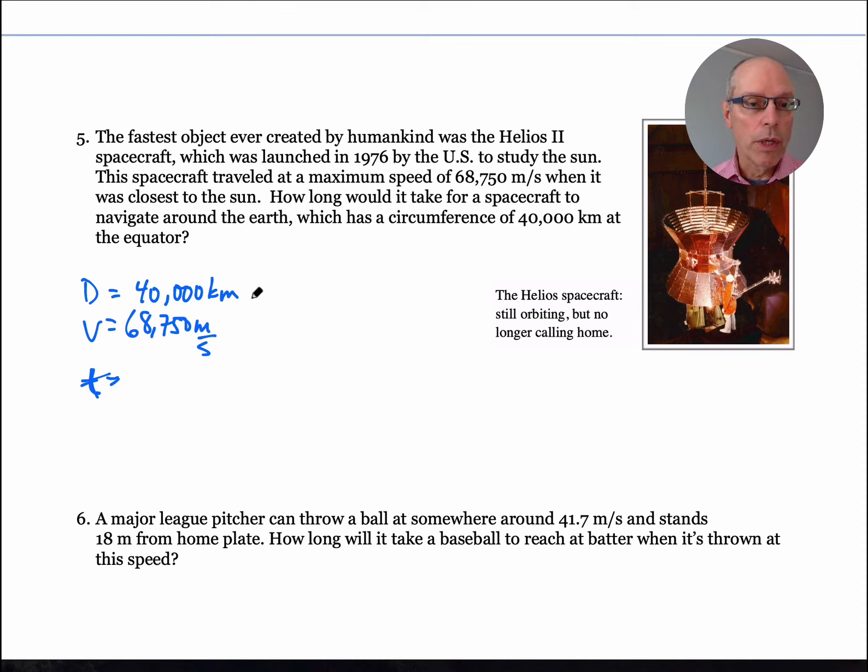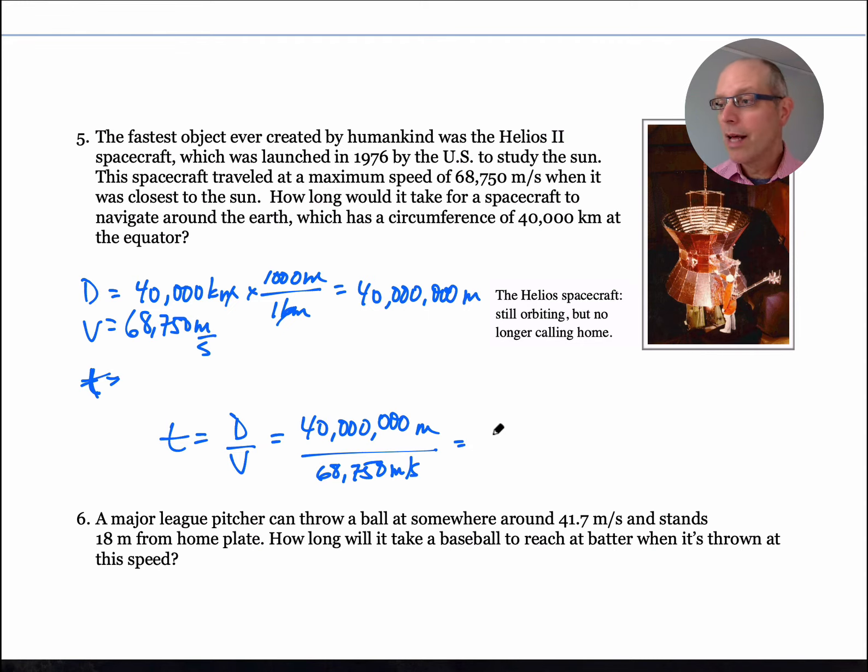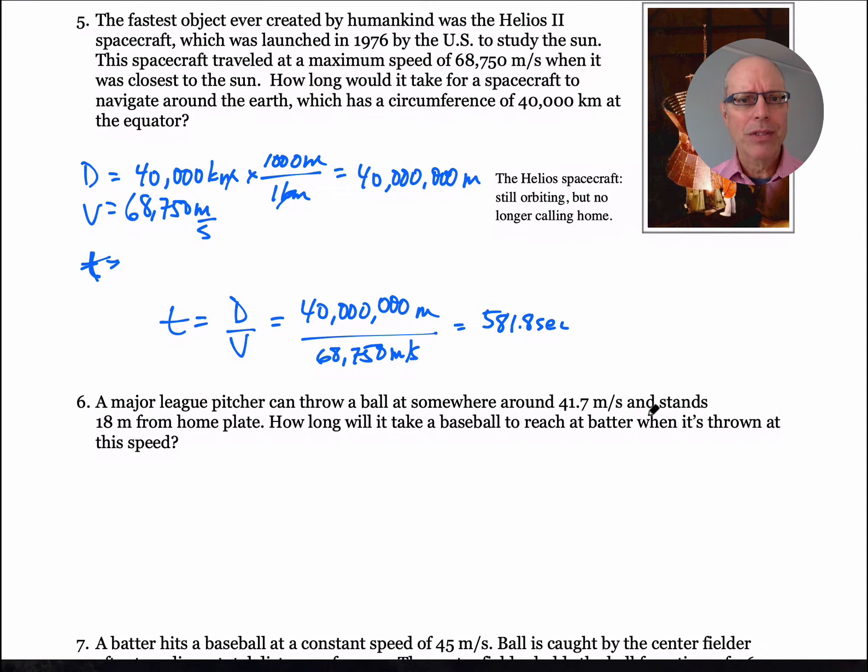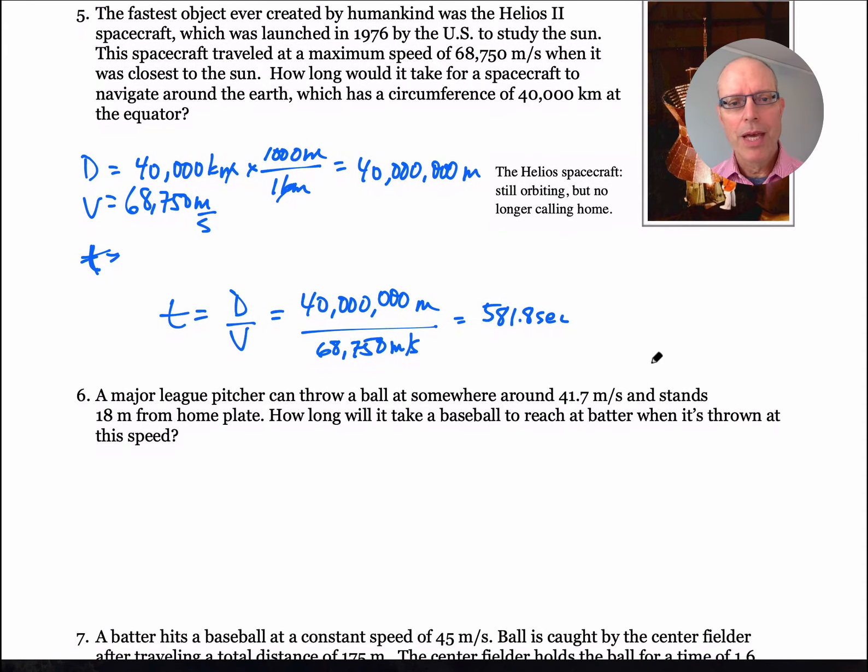Here's a chance to pause. I see kilometers are not a standard unit. I'm going to do the factor label conversion: 40,000 kilometers times 1,000 meters equals one kilometer. Kilometers cancel, and either way you slice it, you end up with 40 million meters of distance. We go same as we did above, T equals D over V. D is 40 million meters divided by 68,750 meters per second. The answer is 581.8 seconds. So this thing would take not quite 10 minutes to cruise around the entire planet earth, do one loop.